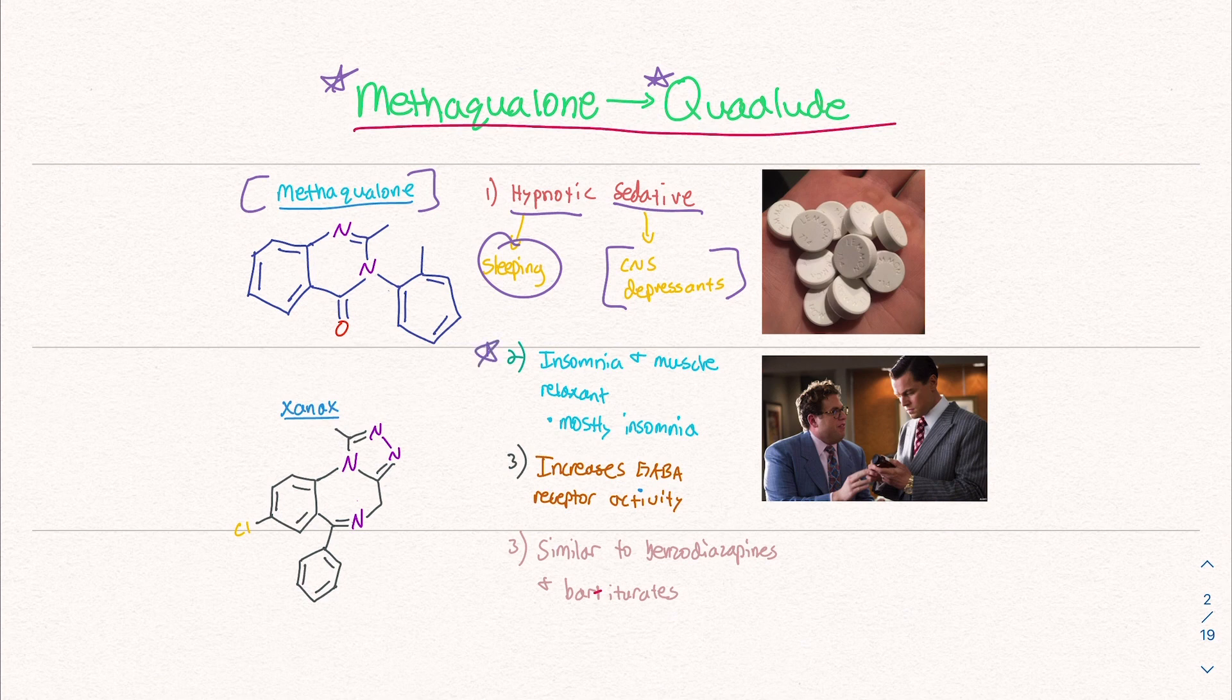It was mainly used for insomnia and it's a very strong muscle relaxant. From what I understand, it was mainly prescribed for insomnia when it was on the market. We'll talk about why it's not on the market at the end of the video. It increases the GABA receptor's activity, and we'll learn about that in this video. This is a really important point that speaks to how this thing even works in the human body.